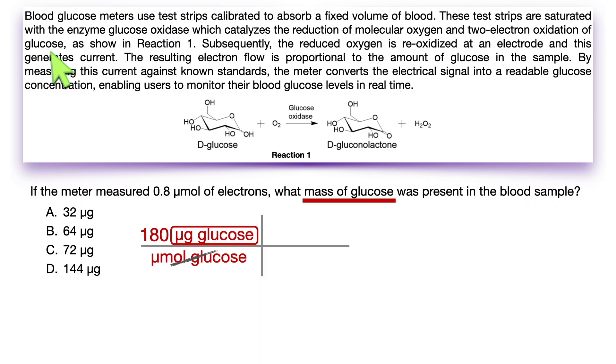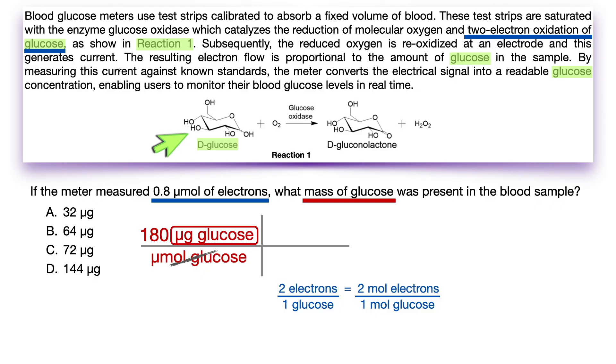Glucose was mentioned a few times in the text and shown in the reaction figure, but the only reference to glucose that had any relevant useful numerical information was two-electron oxidation of glucose. Plus, this is relevant information to the 0.8 micromoles of electrons mentioned in the question stem. So, two electrons are used to oxidize one glucose, which in the grand scheme of chemistry is just like saying two moles of electrons per one mole of glucose. And per the tip I gave you earlier, you can make it two micromoles of electrons per one micromole of glucose.